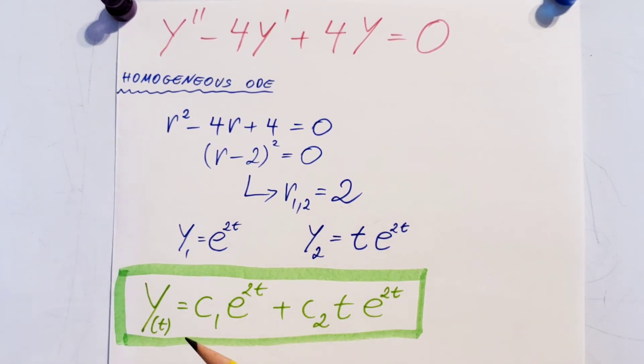For the final step, our solution for the problem is y = c₁·e^(2t) + c₂·t·e^(2t). And that will do it.